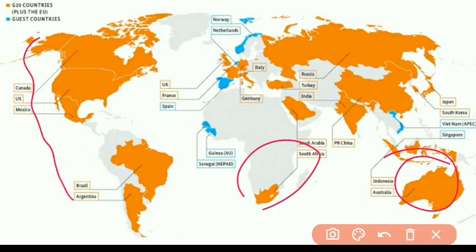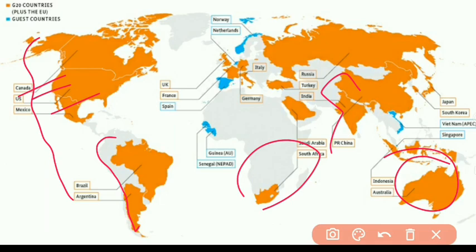From the West we have the advanced economies: Canada, US, and Mexico from North America, and only two countries from South America. It is very important to remember the Asian countries that are members of G20, as they represent the emerging economies. It will be easy to remember if you study the countries continent-wise.